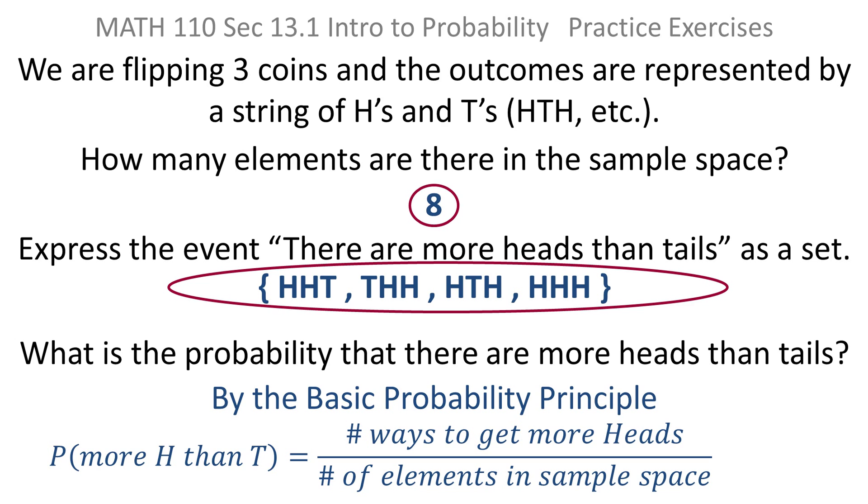But we've already done all the work now, so we know that there are four ways to get more heads. That was the second part of what we've already done. We also know that there are eight elements in the sample space. We did that as the first part of the question. So the probability that there are more heads than tails is four eighths, which of course is just one half.